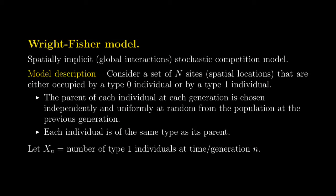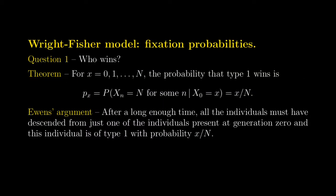I quickly remind you that the Wright-Fisher model consists of a set of N sites occupied by either type 0 or type 1 individuals. The process evolves in discrete time and the basic rules are that the type of each individual at each generation is chosen uniformly at random from the individuals at the previous generation. The process keeps track of the number of type 1 individuals, and the first natural question is who wins — more precisely, what is the probability that type 1 will eventually outcompete type 0.